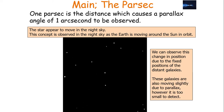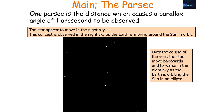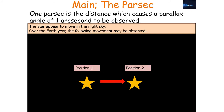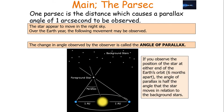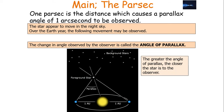These galaxies are also moving slightly due to the parallax, however it's such a small effect we can't detect it. Over the course of the year, the stars move backwards and forwards in the night sky as the Earth is orbiting the Sun in an ellipse. Over the Earth year, the star goes from position 1 to position 2, then back to position 3. The change in angle observed by the observer is called the angle of parallax. If you observe the position of a star at either end of the Earth's orbit — so when they're 6 months apart from each other — the angle of the parallax is half the angle that the star moves in relation to the background stars.